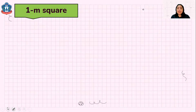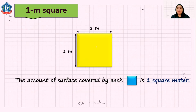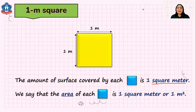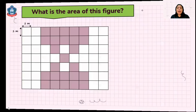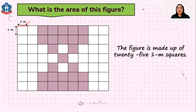I have here a square that measures 1 meter — a 1 meter square. Each side measures 1 meter. So the amount of surface covered by this square is 1 square meter. As mentioned earlier, the area of a figure could be in meters, centimeters, kilometers, or millimeters. So we say that the area of this square is 1 square meter, or 1 meter squared. I have here a figure — remember that 1 square here measures 1 meter. Can you find the area of this figure? This figure is made up of 25 1 meter squares.